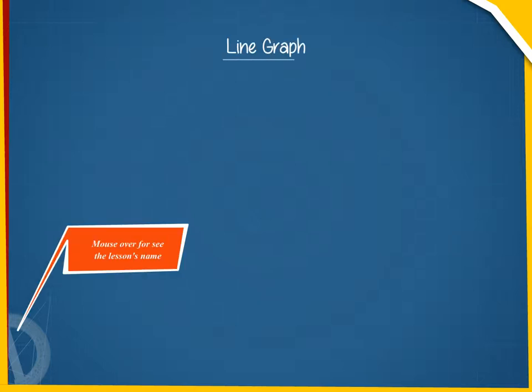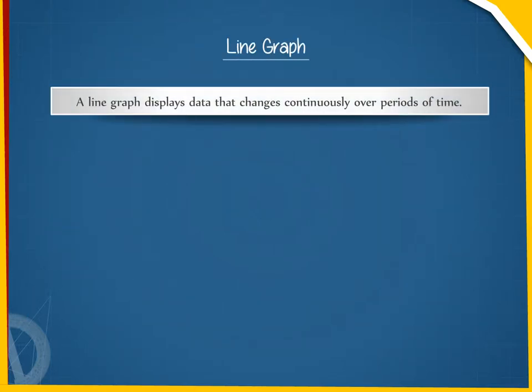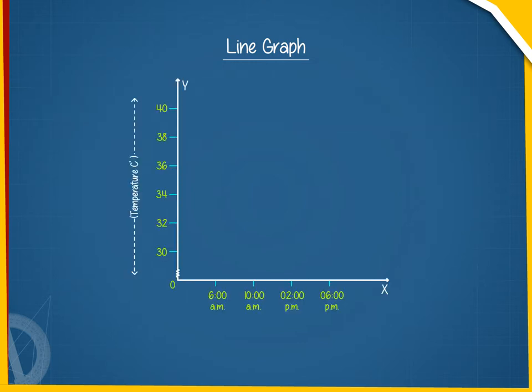A line graph displays data that changes continuously over periods of time. Here is a line graph of the data collected by a doctor about his one patient suffering from fever.